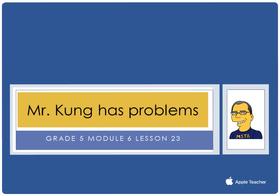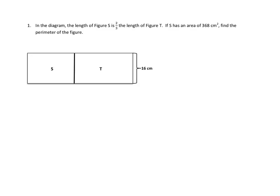Problem number one. The question asks: in the diagram, the length of figure S is two-thirds the length of figure T. So this length is two-thirds of this length. If S has an area of 368 square centimeters, find the perimeter of the figure.